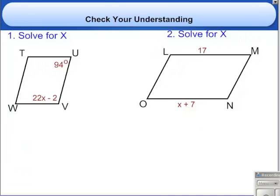Number 1 and number 2, solve for X. Alright, let's look at number 1. What do we know of angle U and angle V? We know they are supplementary angles because they're consecutive. And we know that supplementary angles equal to 180. So let's solve it this way. So we know angle V is 22X minus 2. We add it to angle U, which is 94 degrees. They are supplementary, therefore they are equal to 180 degrees.